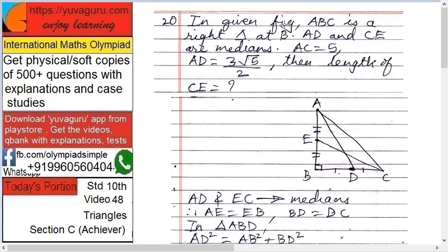Next, in a given figure ABC is a right triangle at B. See, here it is at B. AD and CE are medians. Medians means what? This D is a midpoint of BC and E is a midpoint of AB. Now AC equals to 5. AC is 5. AD equals to 3 root 5 upon 2.